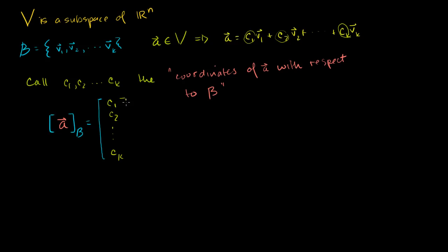There's one slightly interesting thing to point out here. V is a subspace of Rn, so anything in V is also in Rn. But V has k vectors and has dimension k — and k could be as high as n, but might be something smaller. Maybe we have two vectors in R3, in which case V would be a plane in R3. When you specify something in the subspace with respect to its basis, you only need as many coordinates as the dimension of the subspace. So even though A is a member of Rn, you only need k coordinates.